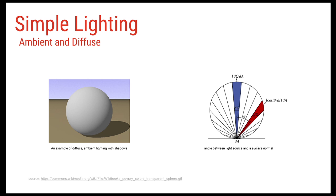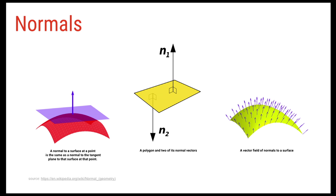Ambient lighting is the minimum amount of light that a point on a surface is going to get by default. Diffuse lighting is the light that reaches your eye after rays from a source bounce off a surface and reach your eye. The amount of light reaching your eye is directly proportional to the angle between the surface of the object and the source of light — and that's what the Lambert cosine law is going to be about, which we'll see in a few frames.